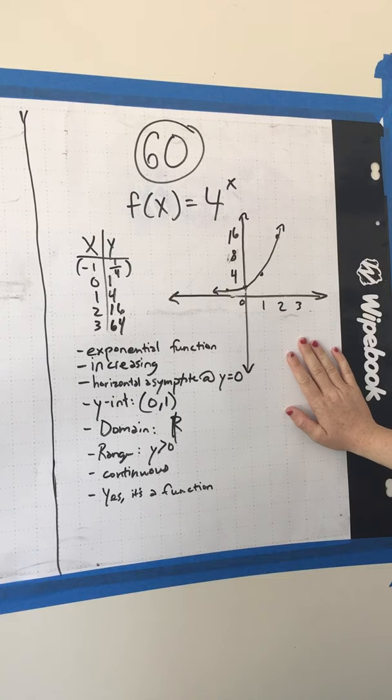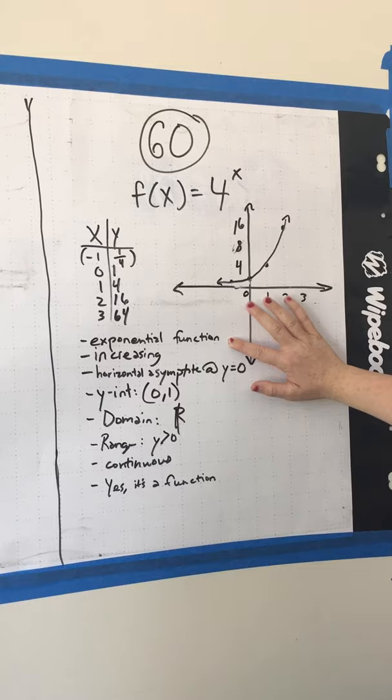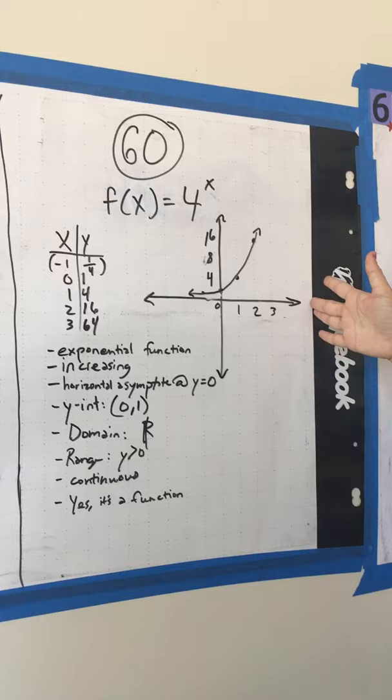So here's the graph, and then we just completely describe it. So it's an exponential function. You can tell just because of the shape. And then it's increasing, because when we look left to right, as the x increases, the y values increase for the whole thing.